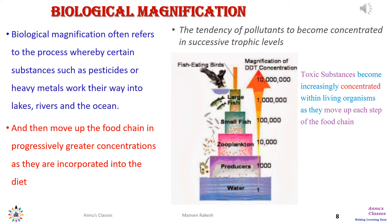In previous classes we learned about pollution and how toxic substances pass from polluted water to groundwater and plants. This diagram shows an aquatic food chain, where we can see that a toxic substance like DDT becomes increasingly concentrated within living organisms at each trophic level as they move up the food chain. This tendency of pollutants to become concentrated in successive trophic levels is called biological magnification.